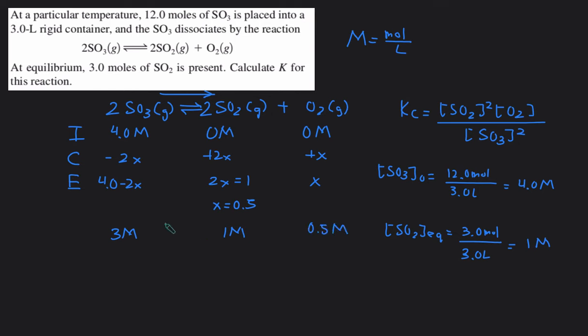Then now that we have all the concentrations of all the reactants and products, we can plug into Kc. So Kc will be the concentration SO2 squared, 1 squared, times the concentration O2, which is 0.5, divided by the concentration SO3 squared, which is 3 squared. Then we can enter that into the calculator, so it'll be 1 times 0.5, divided by 3 squared, and that'll give us 0.05.